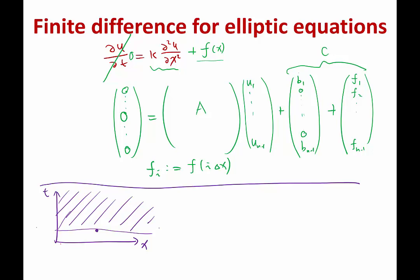So parabolic equation means that there exists such a special coordinate, a special independent variable, for which it behaves like time. If you perturb the equation at a particular point in time, the solution later is going to be different.